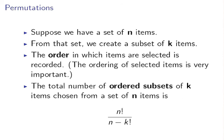The total number of ordered subsets of K items when chosen from N items is given as follows: N factorial divided by N minus K factorial.